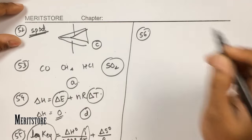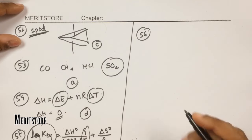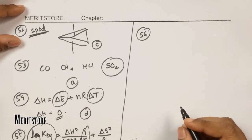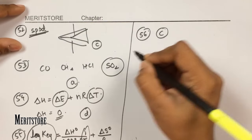Question number 56: in qualitative analysis, to detect the second group basic radical, H₂S gas is passed in the presence of dilute HCl. This is done to decrease the dissociation of H₂S so we can obtain the corresponding sulfide precipitate of Group II. Therefore option C.